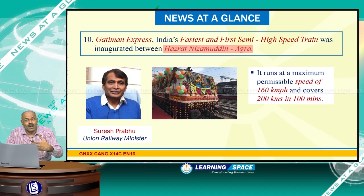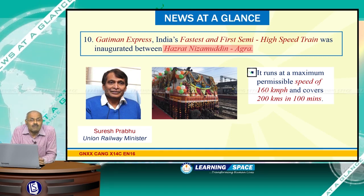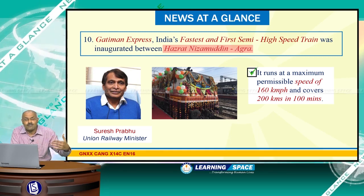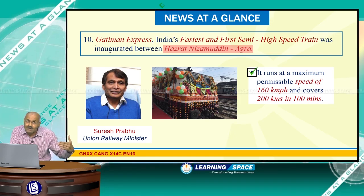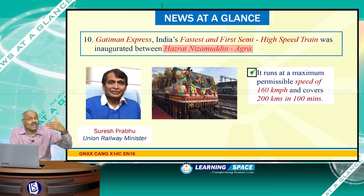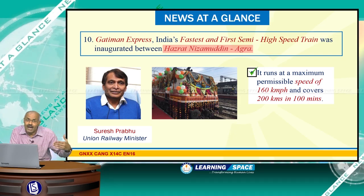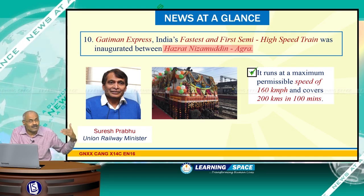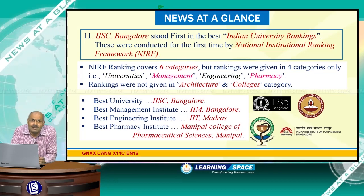Gatiman Express, India's fastest and first semi-high-speed train, was inaugurated between Hazrat Nizamuddin and Agra. It runs at a maximum permissible speed of 160 kmph and covers 200 kilometers in one hour 40 minutes, or 100 minutes.